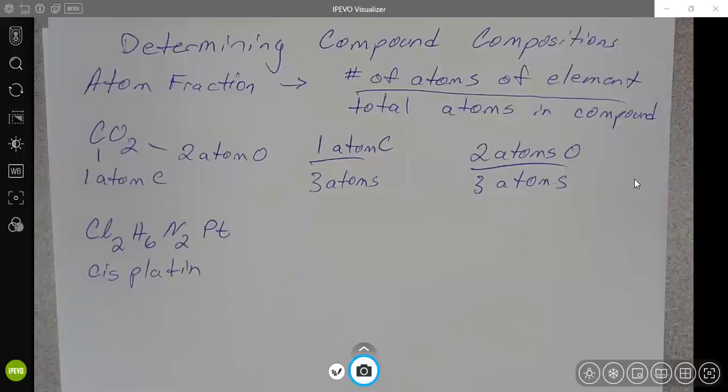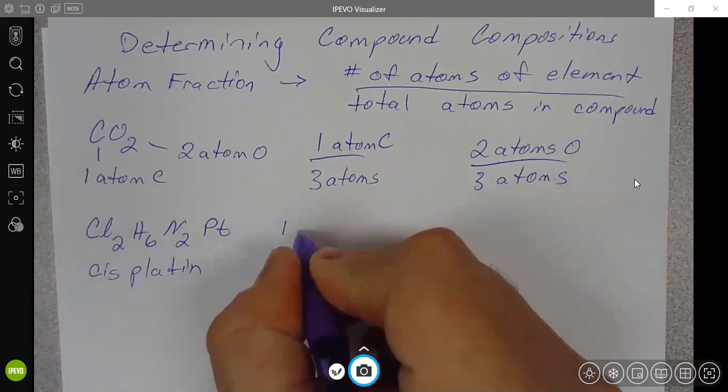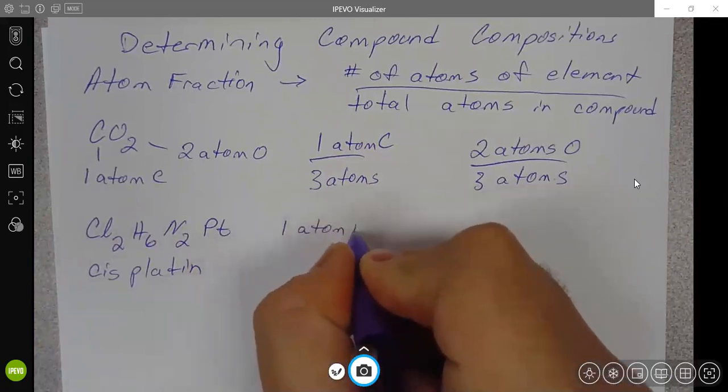You may also recall previously at the end of the atoms unit doing some calculations of molecular masses. And you may recall calculating the molecular mass for cisplatin. And so this is just a little bit of a larger molecule. There is only one platinum atom. One atom of platinum.